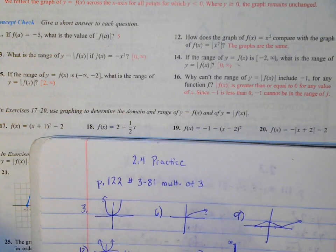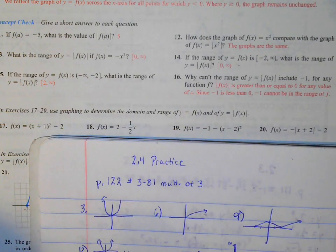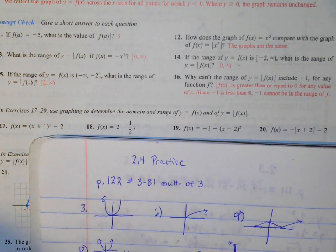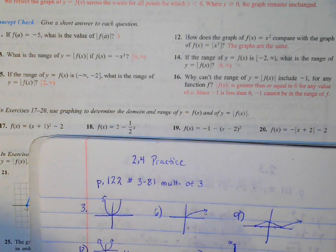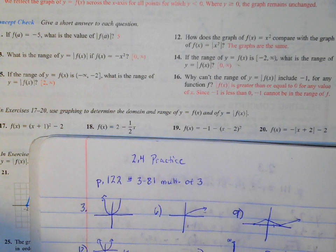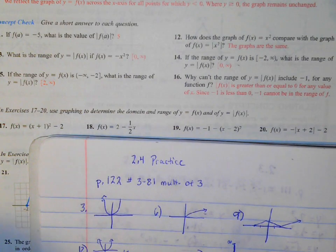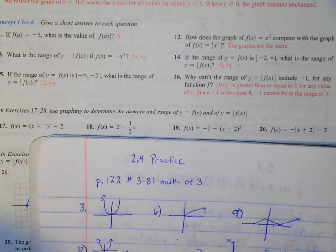Now for the absolute value of f of x — anything that is negative, which would be this part here, will reflect to be up there. So our graph comes down here and then reflects up. The domain includes all x's, so all real numbers. The range can't have any negatives, so we have 0 and y's greater than 0 — from 0 to infinity.